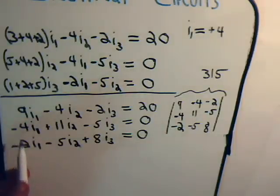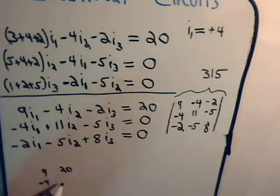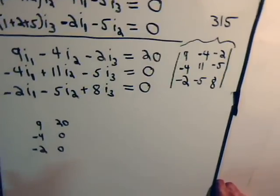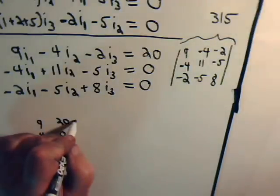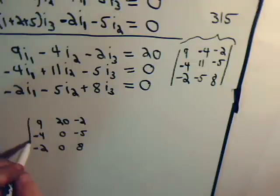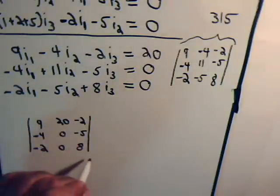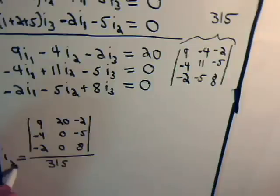So we have 9, minus 4, minus 2, and then here we have 20, 0, 0. Try to keep things in focus, and then we have minus 2, minus 5, and plus 8. Divide this by 315, and that's I2.